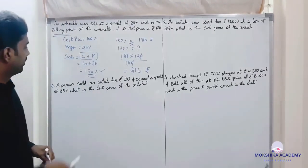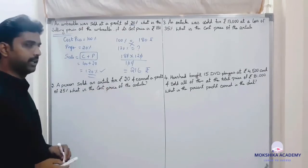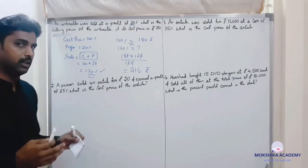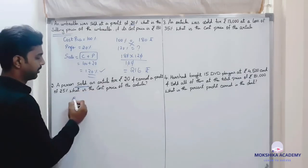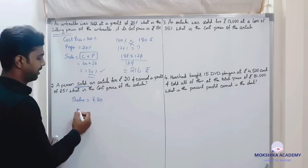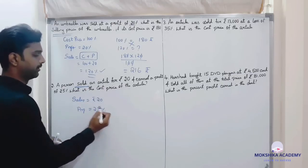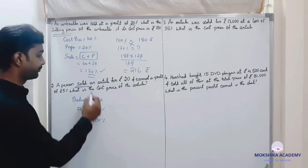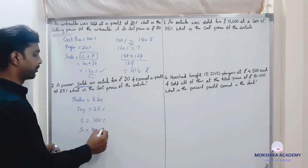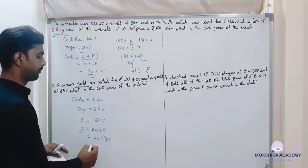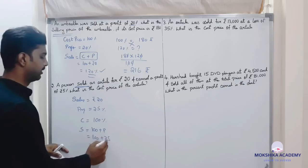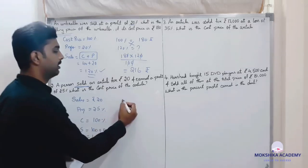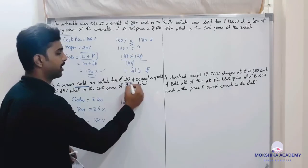Second question: a person sold an article for rupees 20 and earned a profit of 25 percent. What is the cost price of the article? Sales is rupees 20. Profit is 25 percent. So selling price percentage is 100 plus 25 equals 125 percent. We know that 125 percent equals rupees 20.